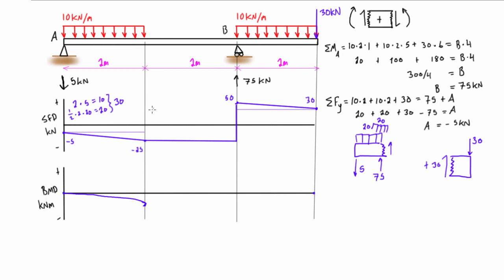The next region is also on the negative side, so the change in magnitude continues toward the negative direction. This area is rectangular: base 2 meters times height 25 kilonewtons gives 50 kilonewton·meters. Starting at negative 30 kilonewton·meters, we add another 50, bringing us down to negative 80 kilonewton·meters. Because the shear force is constant in this region, the bending moment changes linearly.